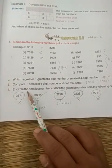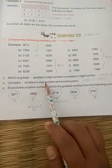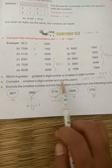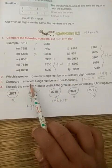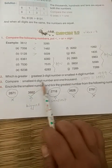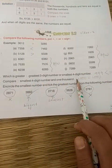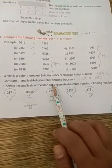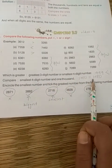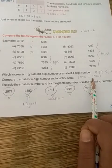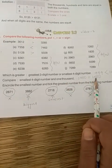Next, compare the smallest 4-digit number and 1000. The smallest 4-digit number is 1000, and we are comparing it with 1000. Both are equal.